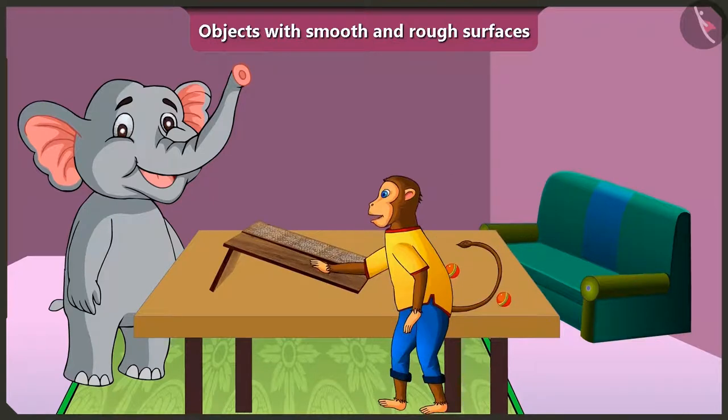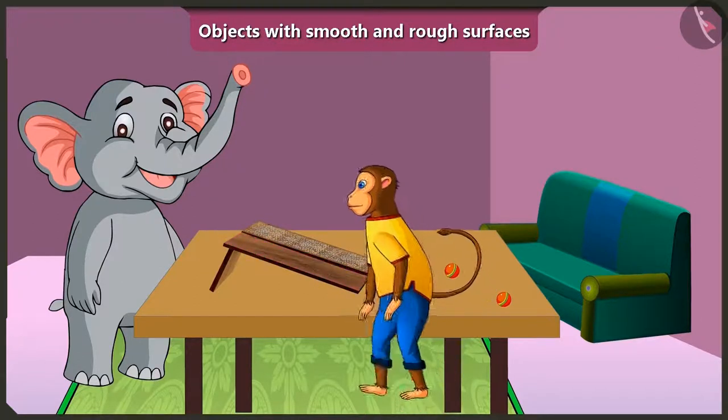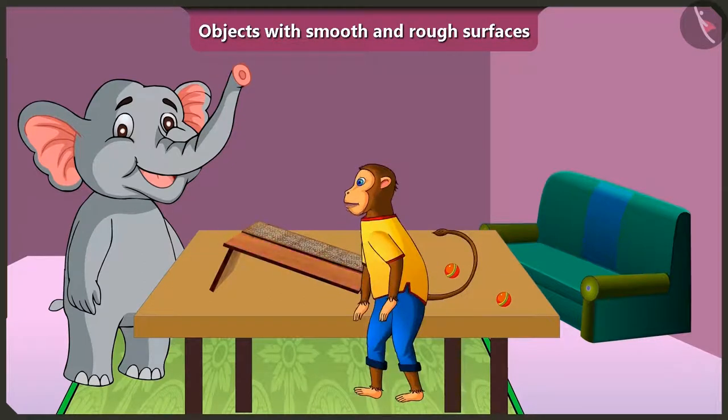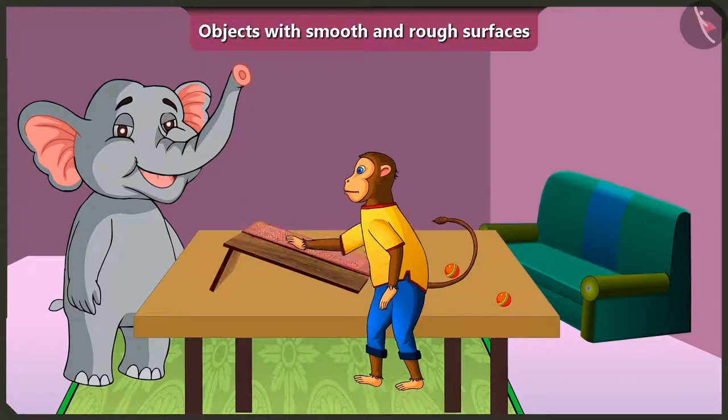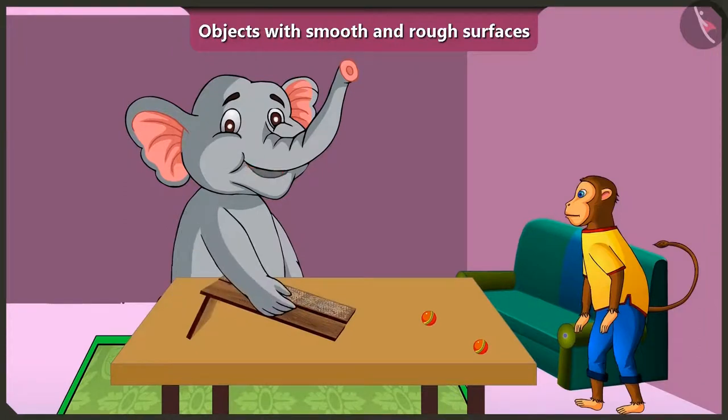Look here, just look at this surface of this slope. Our hands slide smoothly and easily on things which have a smooth surface. We also call them smooth surfaced. Now look at this slope. Its slope is very rough. Now come, touch it and feel it. My hand is sliding on this. Its surface is very smooth.